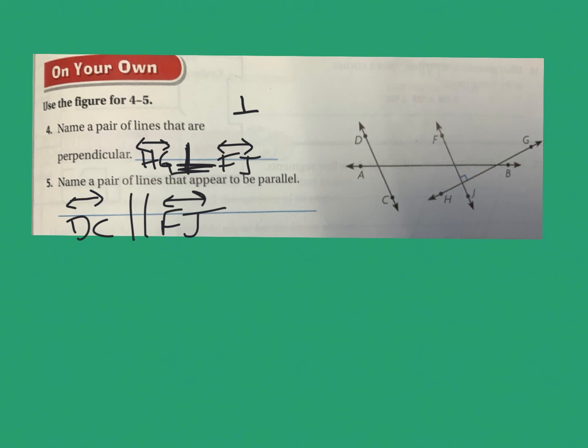That's what this lesson was all about — recognizing parallel lines, intersecting lines, and the type of intersecting lines that give us right angles: perpendicular lines. That's the focus of this lesson. Hopefully that's enough information to get your Think Central done. Let me know if you need additional help. Thank you.